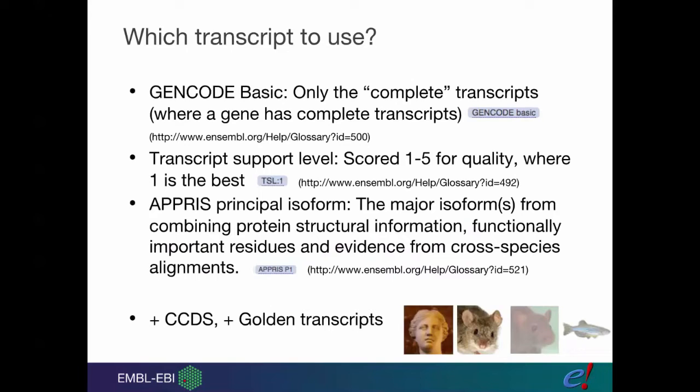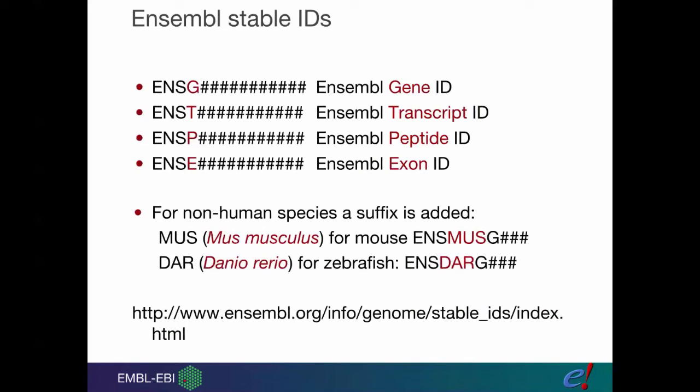We also assign stable IDs. If you ever work with any database, they will have a system of stable IDs. The major benefit of stable IDs is that the names change. Different gene names are adopted in different communities. If you work with stable IDs, you know that no matter what change happens in the community, you're still accessing the same genomic locus.